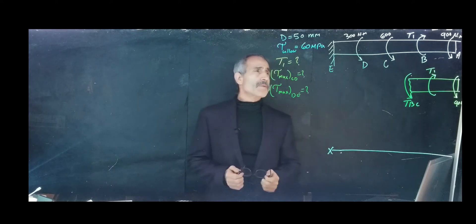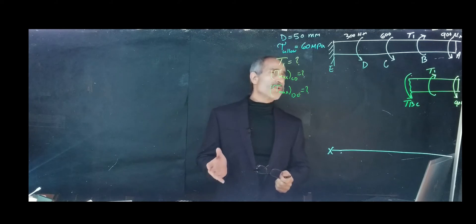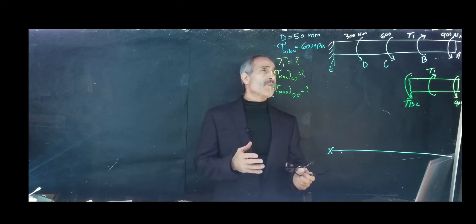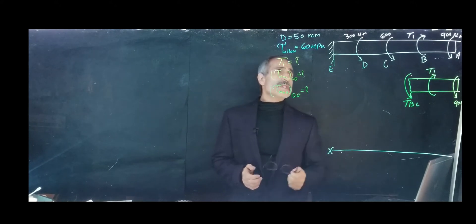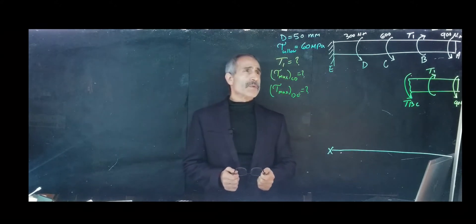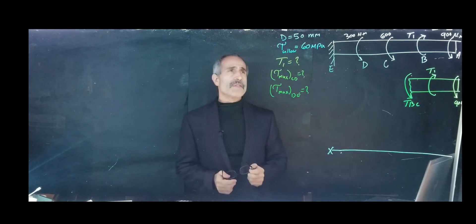We have this aluminum shaft here fixed at one end with torque applied at the other end. At point A the torque is 900 Newton meters. At point B we have a torque T1 which we're going to calculate. At point C we have 600 Newton meters and at point D we have 300 Newton meters. The diameter of the shaft is 50 millimeters.